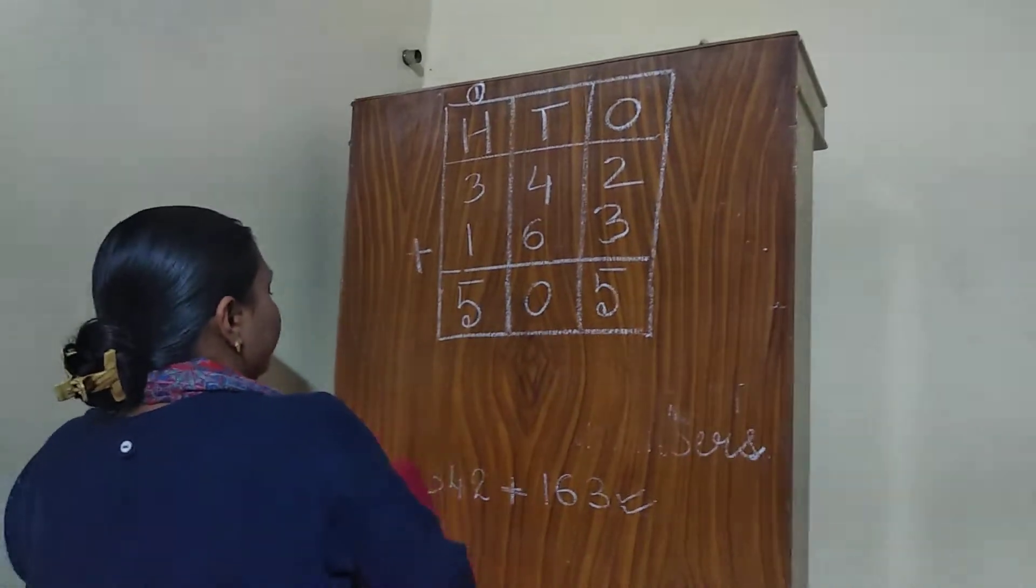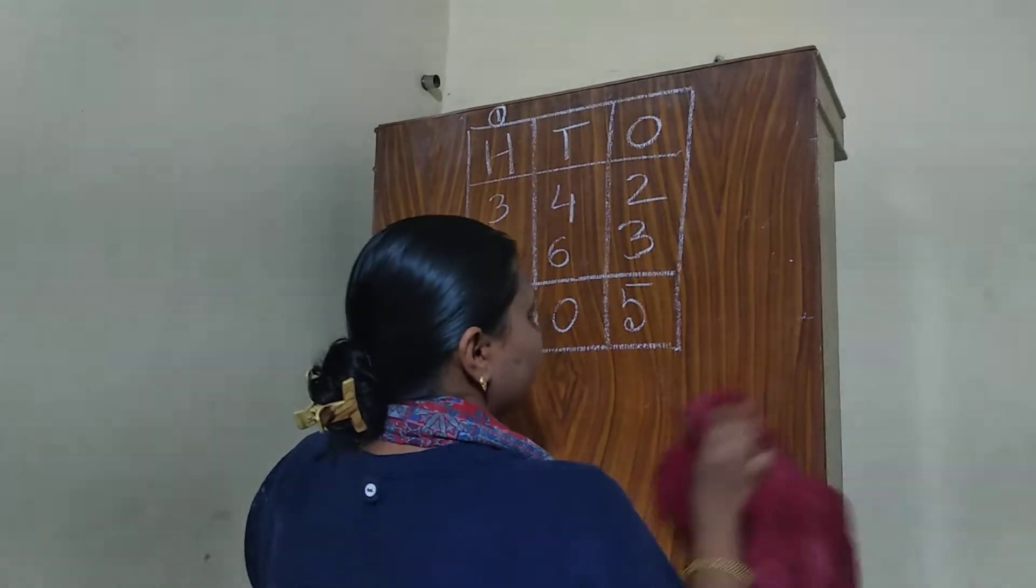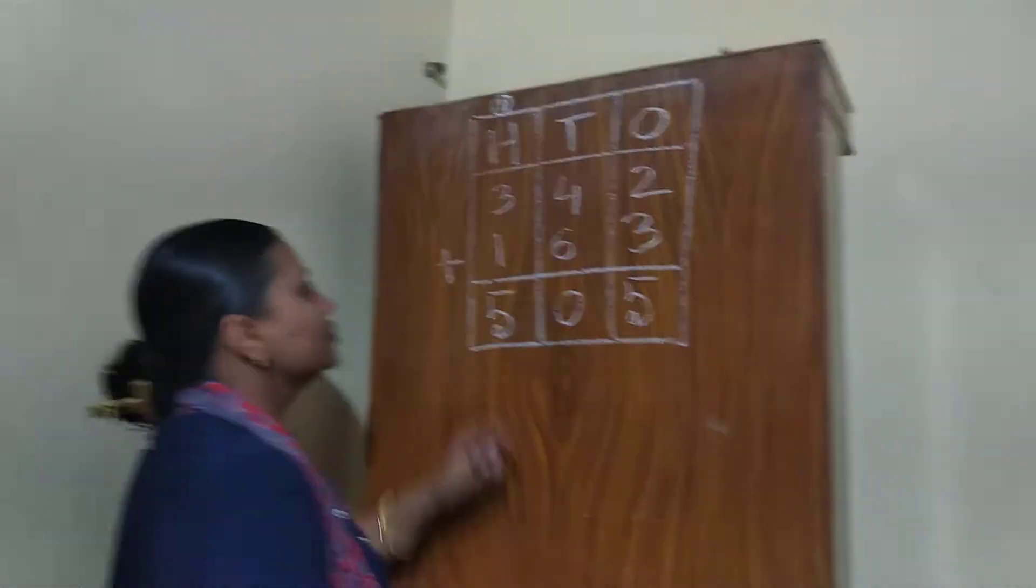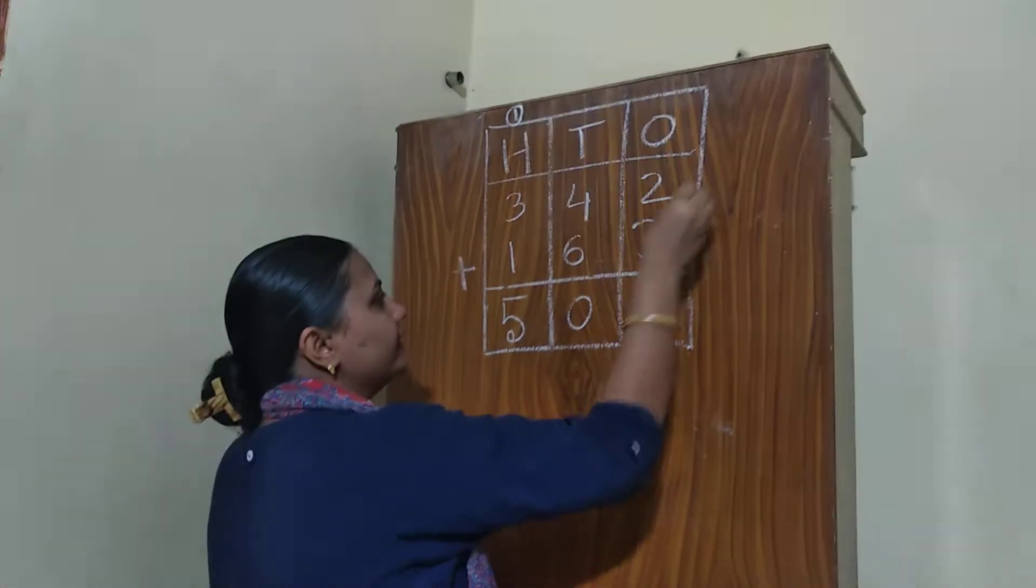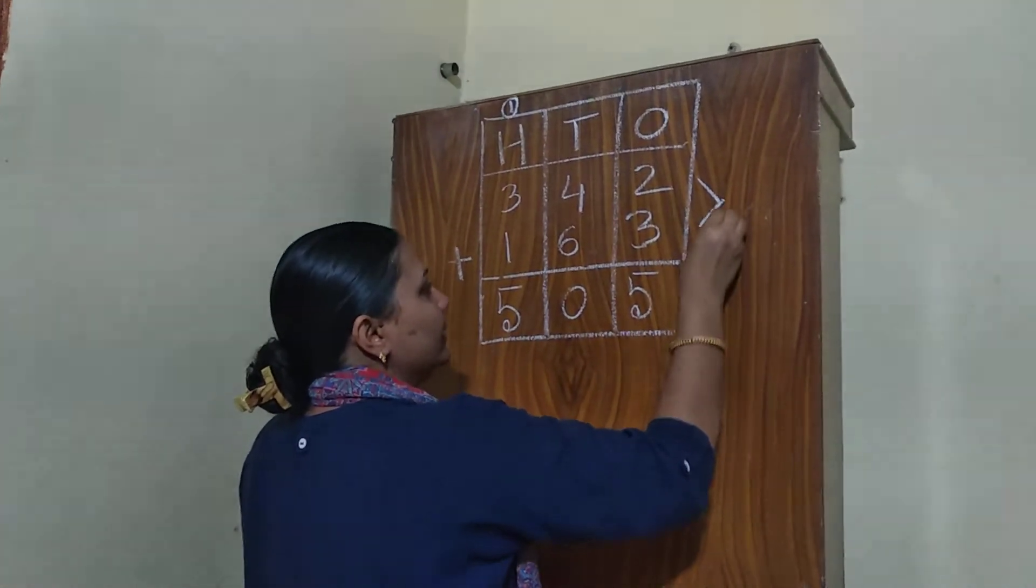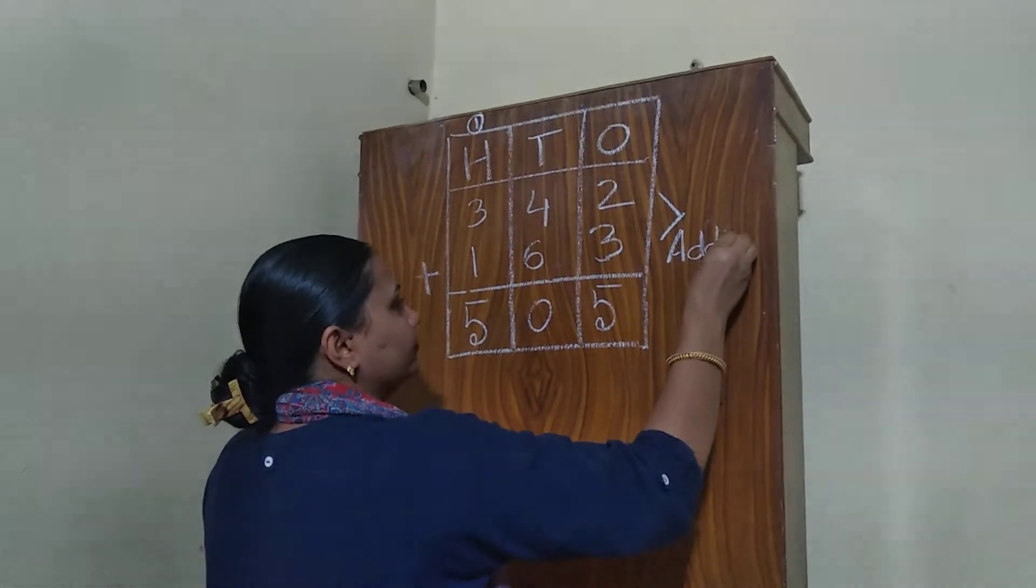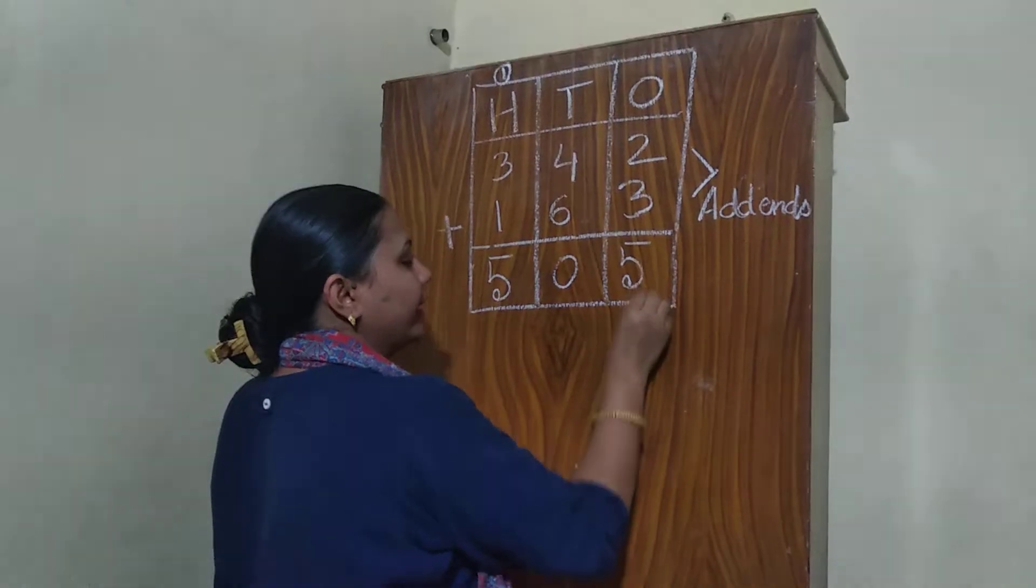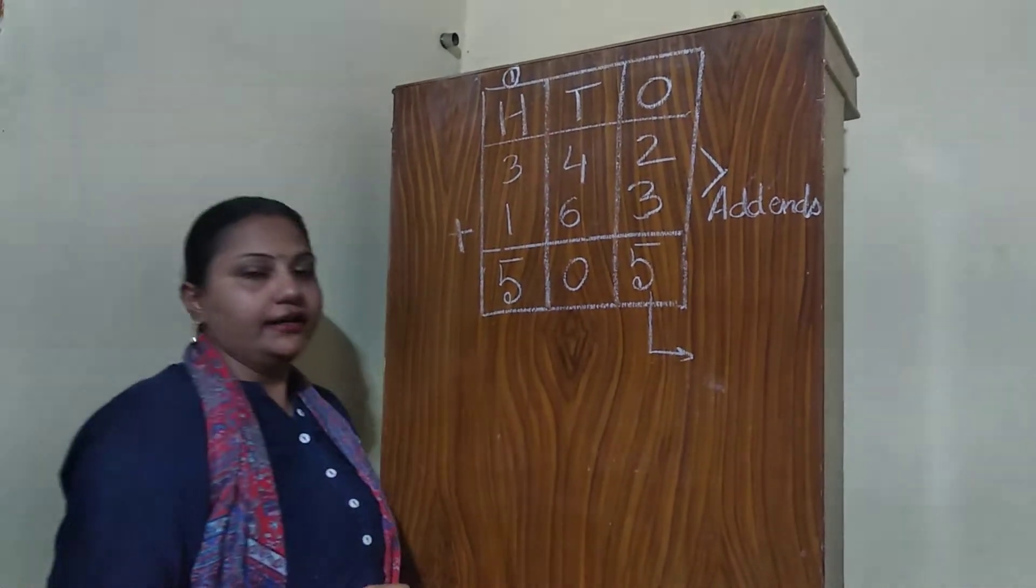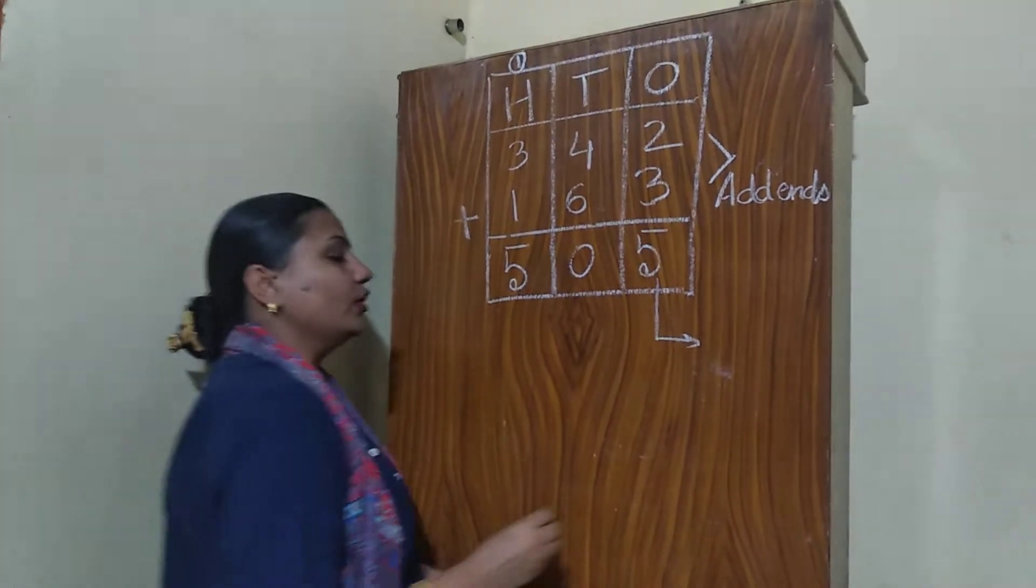Now children, what we call these 2 numbers which we are adding. So these 2 numbers, 342 and 163, we call as addends. And this 505, the answer of the addition process is called sum.